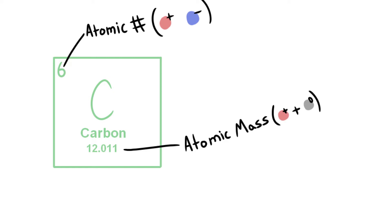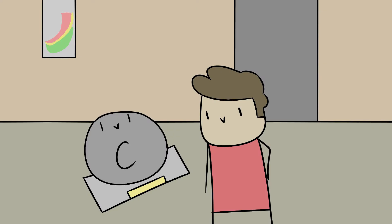The atomic mass is the sum of protons and neutrons. You can think of it as its weight. Fatty!